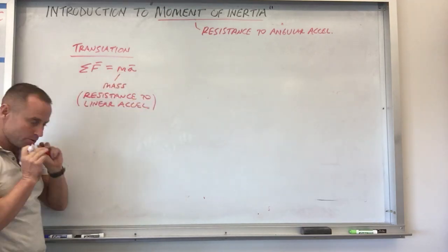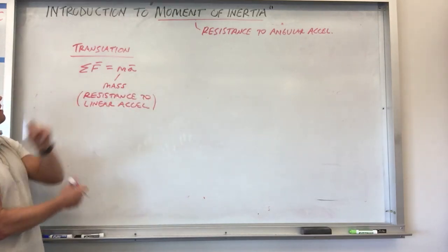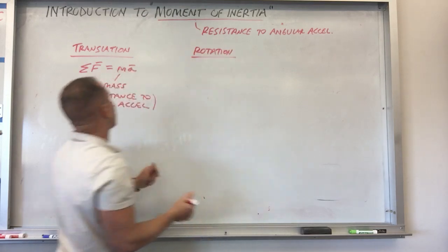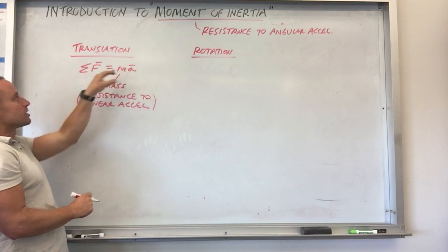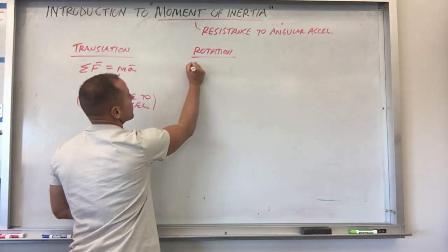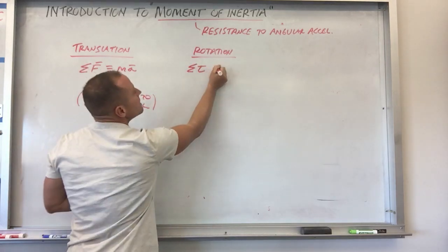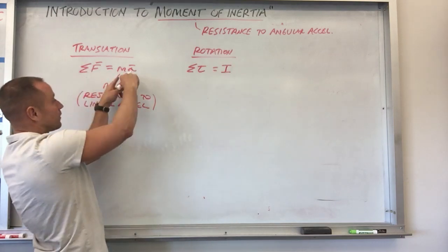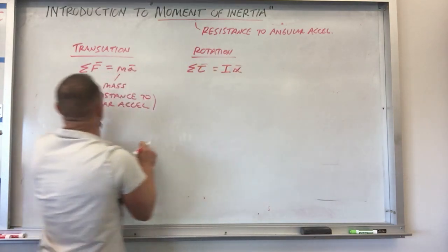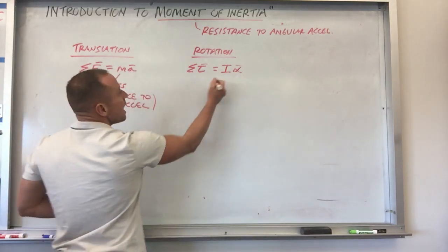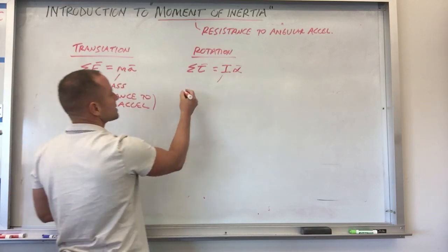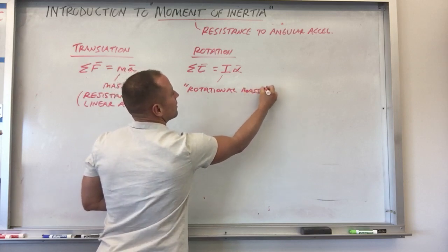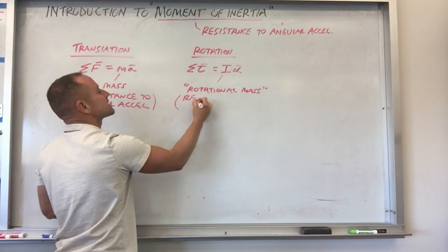The larger the mass, the more difficult it is to get something to accelerate along a line. If we want to talk about things that rotate, we can do the analogous thing. The thing that causes linear acceleration is forces; the thing that causes angular acceleration is torques — the rotational version of force. So we say torque equals I times angular acceleration, where I is the rotational version of mass — kind of a rotational mass, or more accurately, a resistance to angular acceleration.